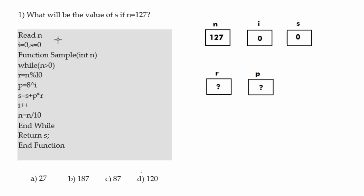First, the statement 'read n' means we take input from the user, so n is given as 127. We also have variables i and s, both initialized to 0. After that there is a function called 'sample' which takes one argument n, and has a body ending with 'end function'. Inside this function sample, we have a while loop.